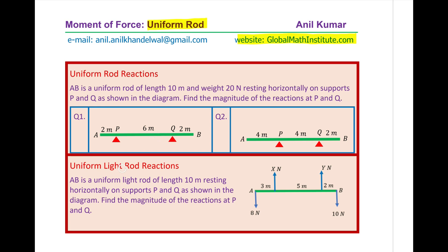A similar question has been taken with a light rod. The question is: AB is a uniform light rod of length 10 meters resting horizontally on supports P and Q as shown in the diagram. Find the magnitude of reactions at P and Q. X and Y are unknown, which you need to find.